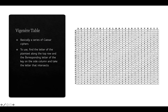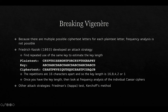We can encode things using a Vigenère table, which is basically just a series of Caesar ciphers. To use it, find the plain text letter along the top row, find the corresponding key letter on the side column, and take the intersecting letter. For example, taking a G encoded with key letter C produces an I — relatively easy to implement.